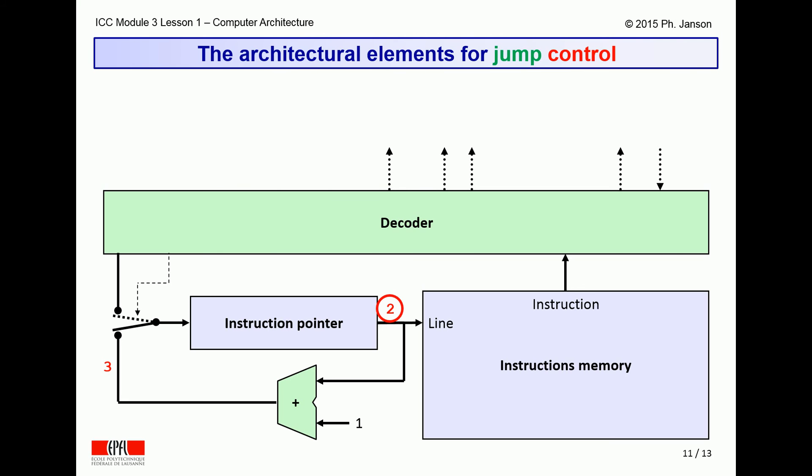When the instruction pointer points to line 2, the instruction memory presents the decoding unit with the instruction jump LTE R1, 0, 6. The decoder splits this instruction into its elements, jump LTE R1, 0, and 6, as possible alternate input to instruction pointer to the left of the picture, and it waits for the arithmetic unit to compare R1 and 0. This unit then signals to the decoder whether or not R1 is less than or equal to 0.